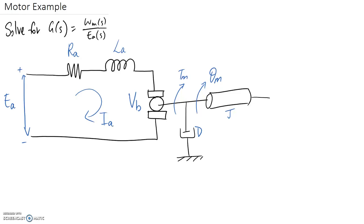So in this question we're going to try and get the transfer function G which is equal to the speed omega m, that's the speed of this shaft, divided by Ea which is the input voltage to the motor.